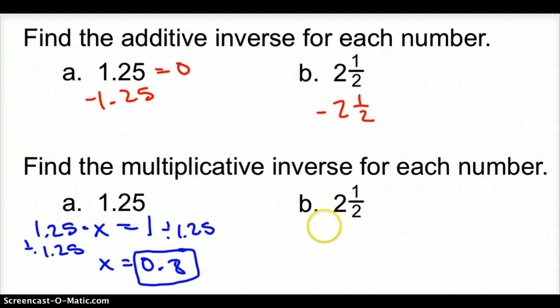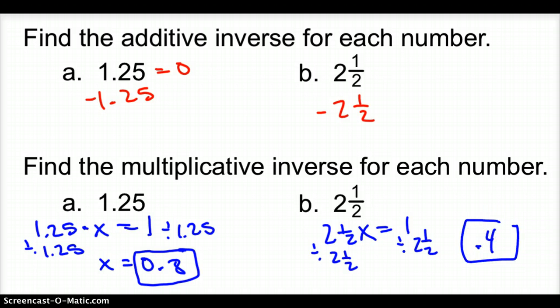Same thing with B. Again we want to go 2 and 1 half times x, times a variable, equals 1. What do we have to do? We have to divide by 2 and 1 half. We have to divide by 2 and 1 half. So then we come up with 0.4 for being our multiplicative inverse.